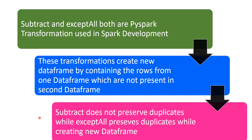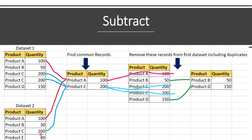Coming to the difference: subtract, while creating a new data frame by retaining only the records from the first data frame, will not consider duplicates. So it will remove records even if you have duplicate records that are common between the two data frames. But exceptAll preserves duplicates — that is the major difference between these two functions.